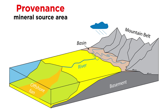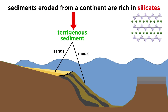Another important characteristic of a sedimentary rock is where its material comes from, or its source area. Geologists call this a sediment's provenance. It turns out that the provenance of a sedimentary rock is related to its composition. This makes sense since a rock composed of sediments that eroded from a continent is probably going to be dominated by silicate minerals. These types of sedimentary rocks are said to be terrigenous.